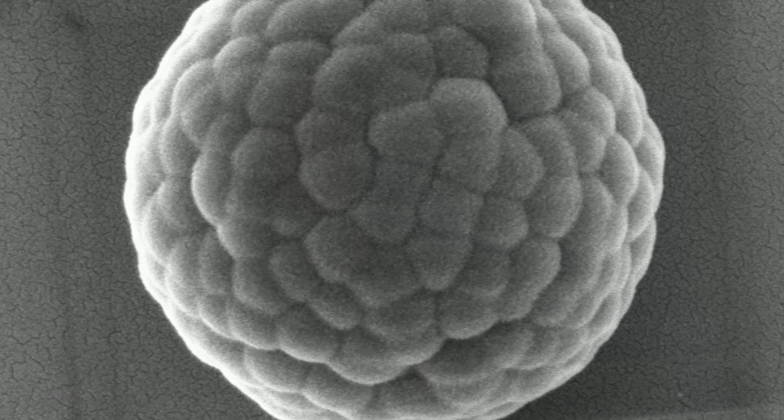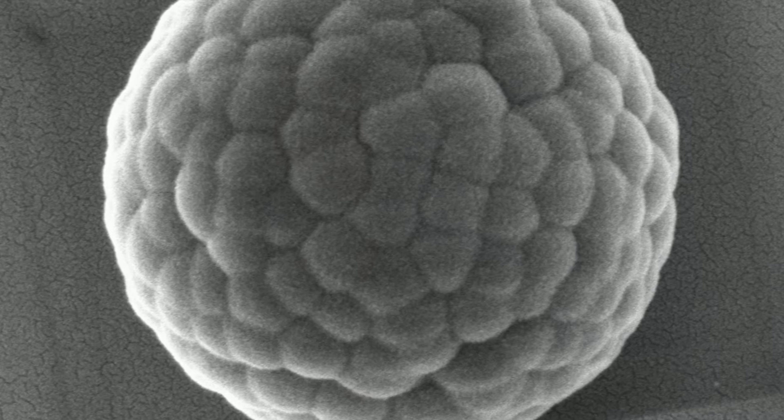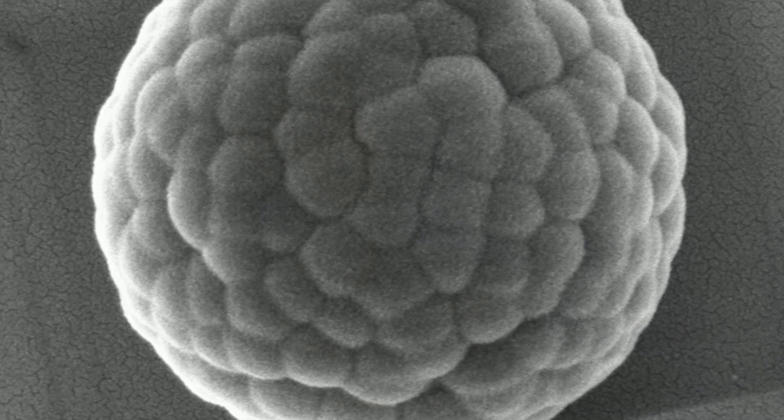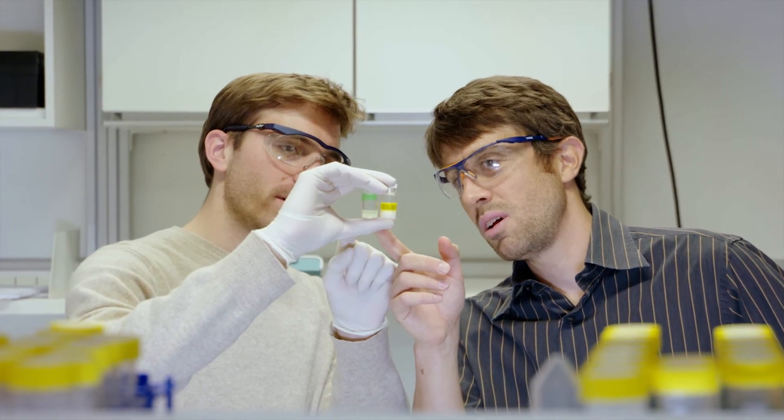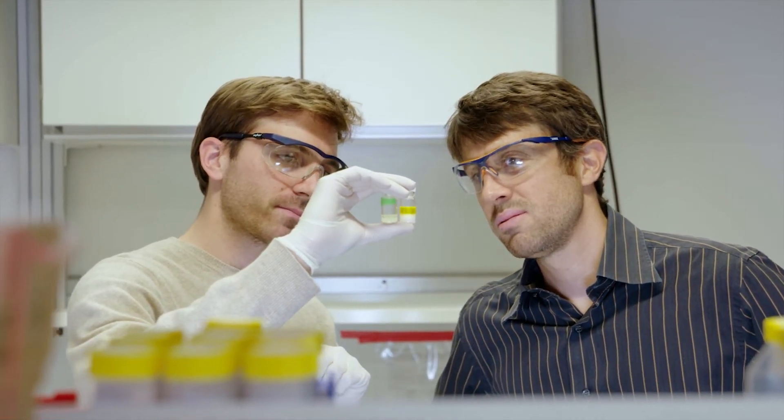The special feature about raspberry particles is their surface. The surface is rough, hence resembles a raspberry, and that's why we named it in this way. Raspberry particles can be dispersed in both fluids, either oil or water, and they remember the phase from which they were dispersed.